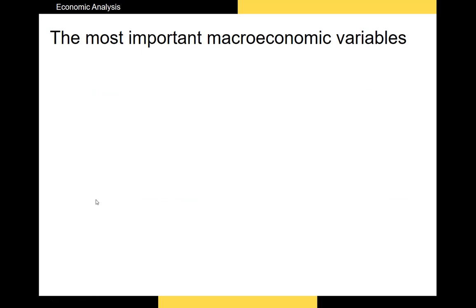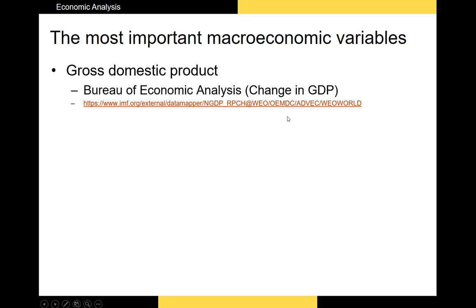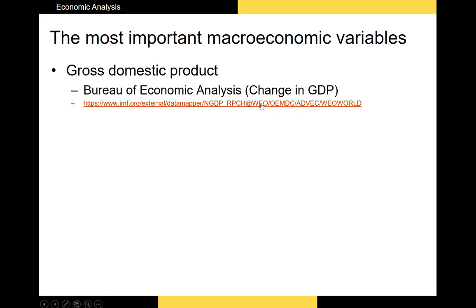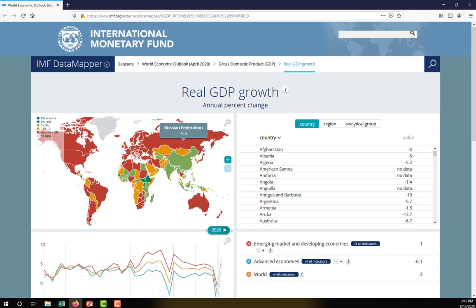Some macroeconomic variables are more important than others. Let's start with the most important: GDP, or gross domestic product. GDP is arguably the best metric we have with respect to macroeconomic analysis — it tells us how large the economy is. What we're really more focused on is the percentage change in GDP. Here on the IMF's website, we can get a breakdown of real GDP growth over the last year, and due to COVID, most countries around the world have negative GDP growth — the US at negative 5.9%.